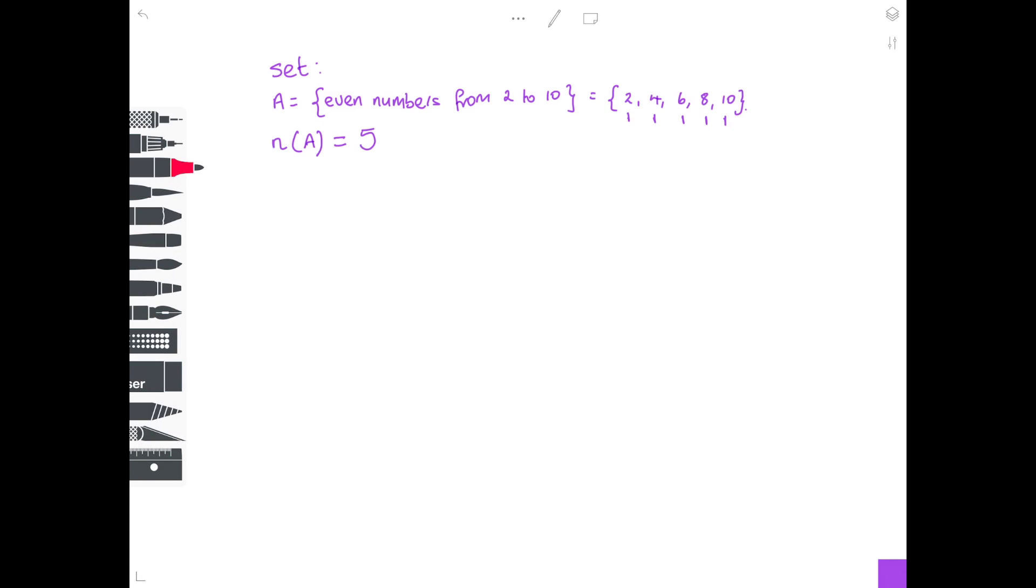The second bit of notation you need is a symbol that stands for 'is an element of', to indicate that something is a member of a set. The symbol that's used for that is a bit like an E, but it's sort of a C with a line through, a curly E.